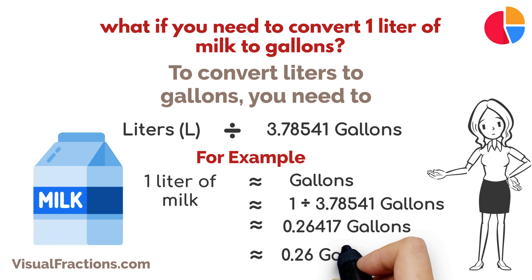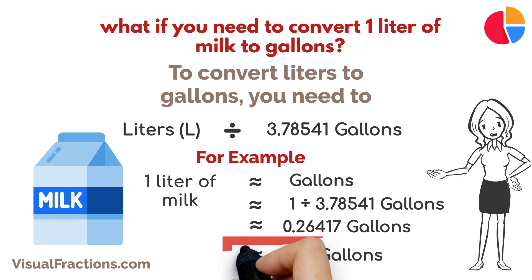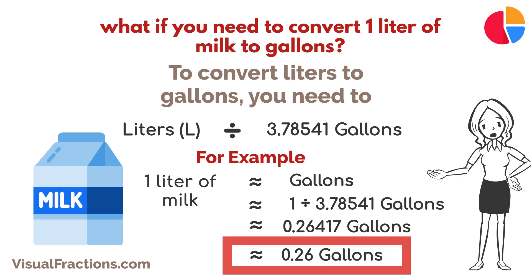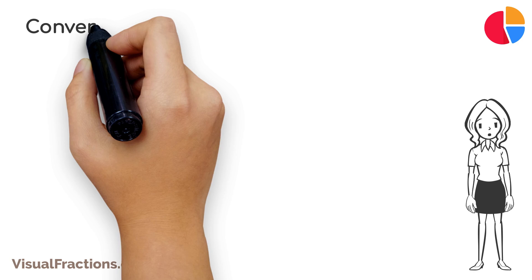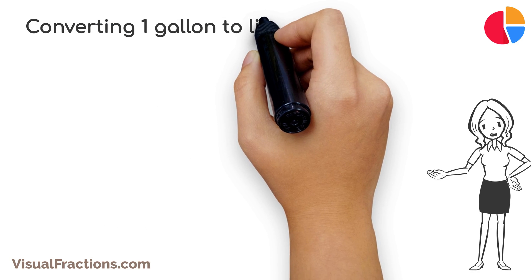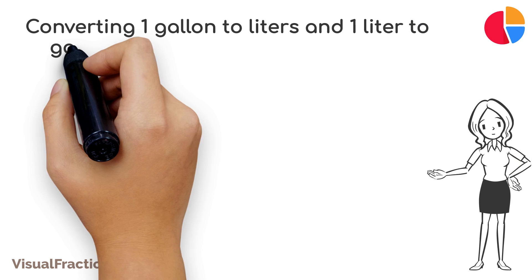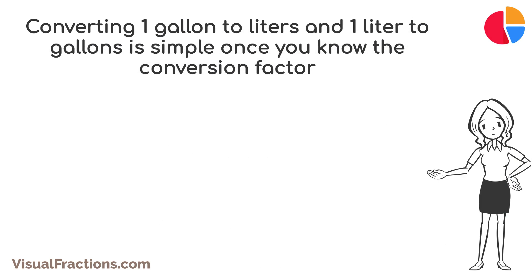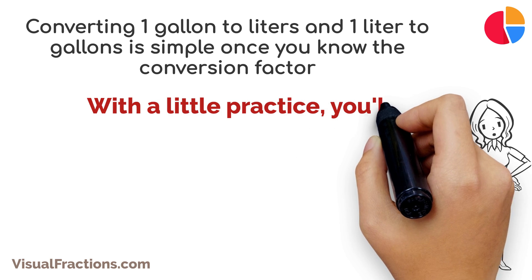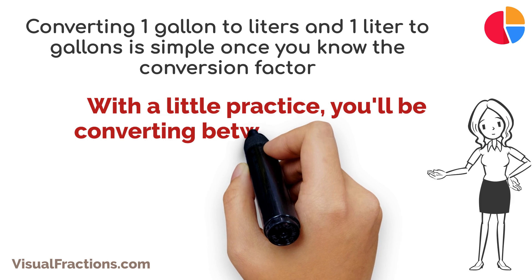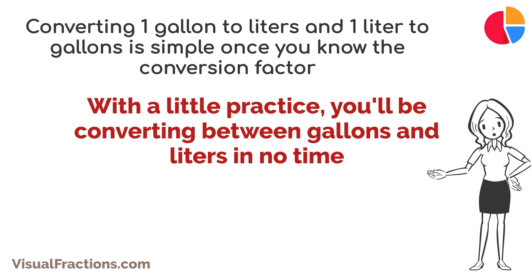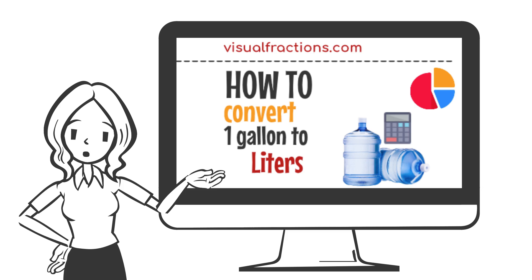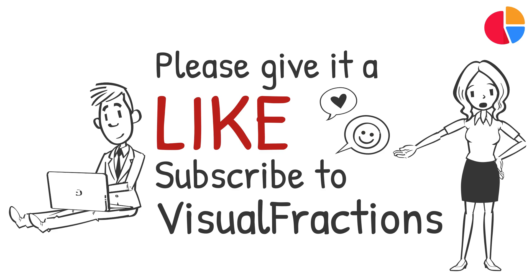We should round this number to the nearest hundredth, so our final answer is approximately 0.26 gallons. And there you have it — converting one gallon to liters and one liter to gallons is simple once you know the conversion factor. With a little practice, you'll be converting between gallons and liters in no time.